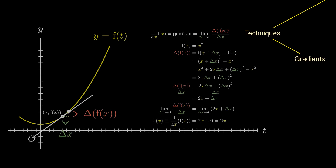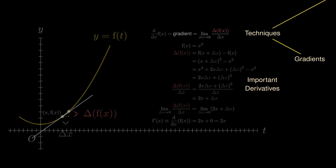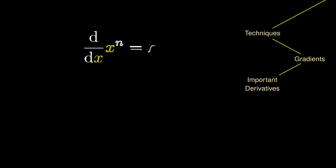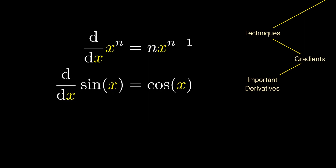Using this technique, we can derive three really crucial derivatives. Firstly, the derivative of x to the n is n times x to the n minus 1 — we bring the power down and subtract the power by 1. Secondly, the derivative of the sine function is the cosine function. And lastly, the derivative of the exponential function is the exponential function. From these basic derivatives, we can derive many other useful derivatives.